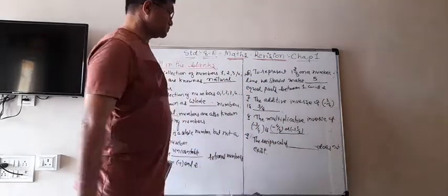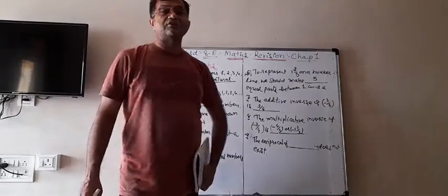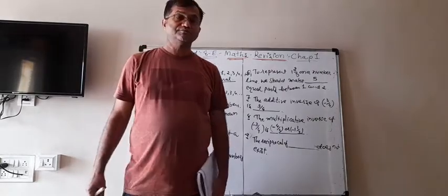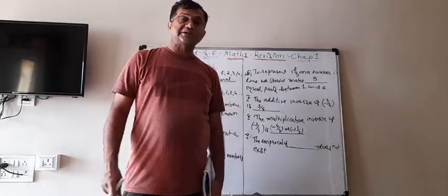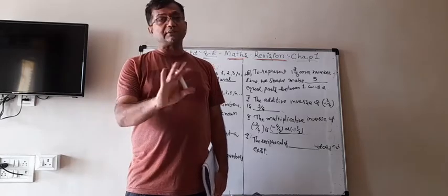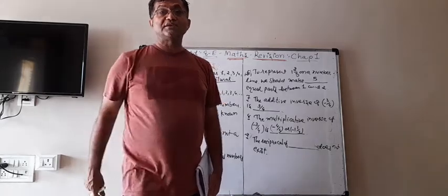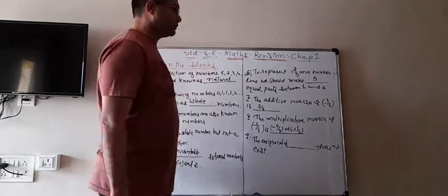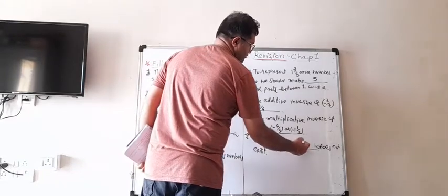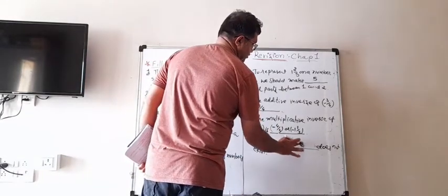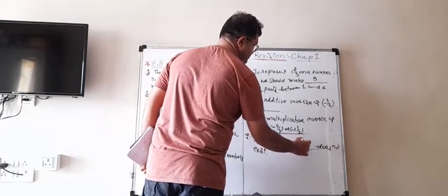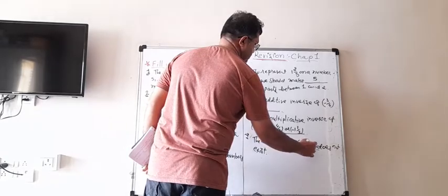Number 9. The reciprocal of blank does not exist. We know that all numbers have reciprocals except one number — and that number is 0 — because division by 0 is not possible; we cannot write 1 upon 0. So the answer is 0.